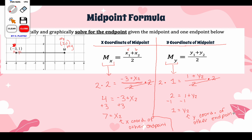Putting it all together, the other endpoint is (7, 1). The graph was cut off, but (7, 1) would be somewhere over here — and if you counted, you would have 5 boxes on the left and 5 boxes on the right, so graphically that holds up as well. Just remember what these variables stand for, and that will help you immensely when substituting into these formulas.